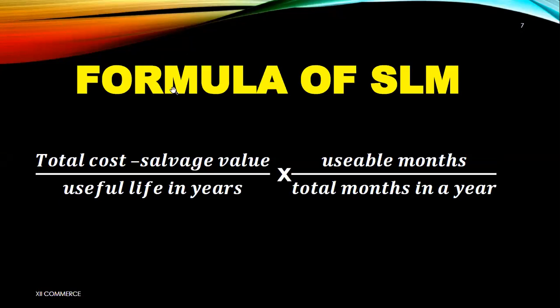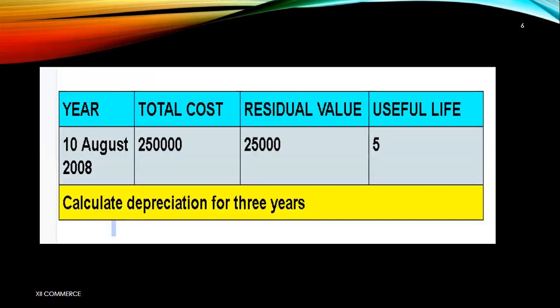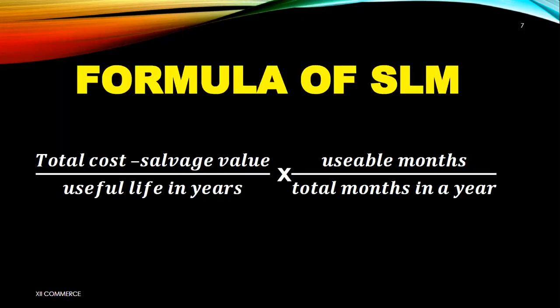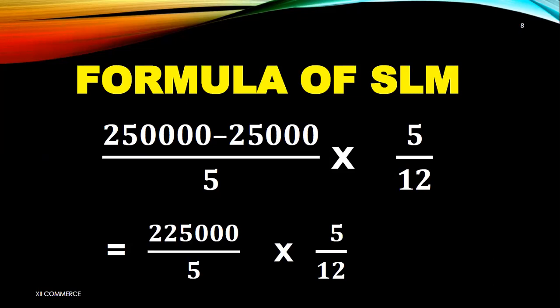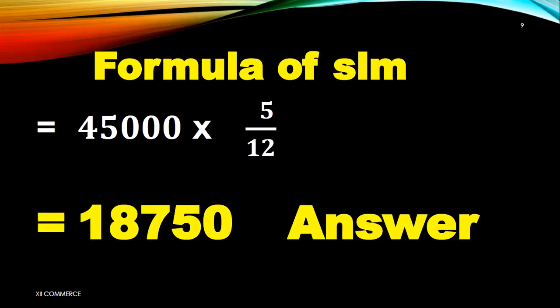The formula to use is: total cost minus salvage value, divided by useful life, multiplied by usable months over total months in a year. Putting in values: 250,000 minus 25,000, divided by 5, multiplied by 5 upon 12. So 250,000 minus 25,000 is 225,000; divided by 5 is 45,000; multiplied by 5 upon 12 gives 18,750. That is the first year depreciation. Please check my calculation against yours.